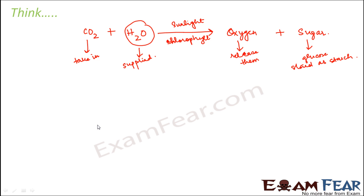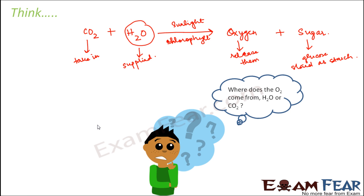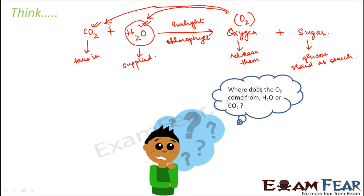So this is how the entire process takes place. Now the question is: where does the oxygen come from? Carbon dioxide also has oxygen, and water also has oxygen. The question is whether the oxygen comes from the water or from the carbon dioxide. In order to clear this doubt, another set of experiments was performed just to prove whether the oxygen comes from water or from carbon dioxide.